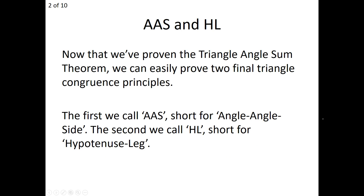Let's take a look at what AAS and HL actually stand for. You've probably guessed it — AAS stands for angle-angle-side congruence. And HL stands for hypotenuse leg. It's actually a special case in our shortcut to congruence. The reason why we can prove these two last triangle congruences is because we have the triangle-angle-sum theorem now in place, and because of that theorem, we can prove the angle-angle-side congruence shortcut very easily.